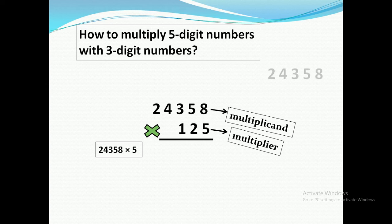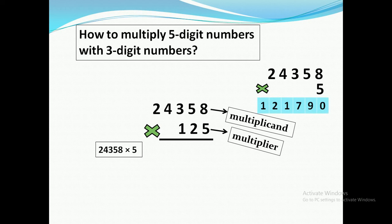So we will multiply these two numbers together by reading the five times table. Five eights are forty — we write zero here and carry four to the next digit. Five fives are twenty-five, and we add four to get twenty-nine — we write nine here and carry two to the next digit.